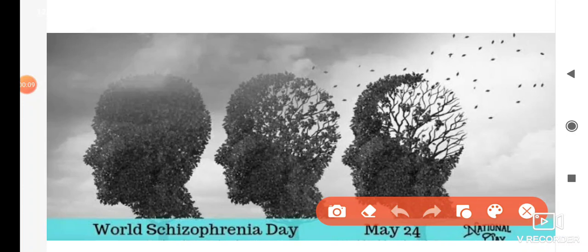Our first current affair: World Schizophrenia Day is celebrated on the 24th of May. We are not doing the question pattern, but we are going to read direct current affairs as one-liners. So, World Schizophrenia Day — when is it observed?